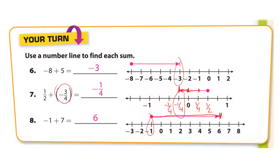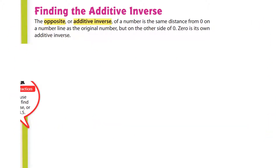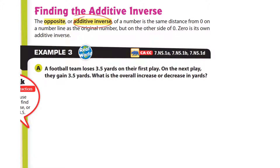The additive inverse — the opposite of a number — is the same distance from zero on the number line. They are simply opposites. For example, negative seven and positive seven are additive inverses.